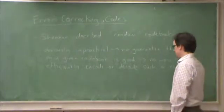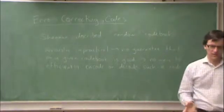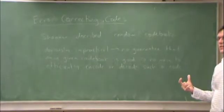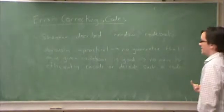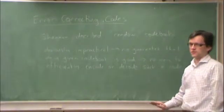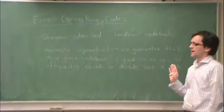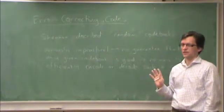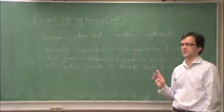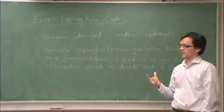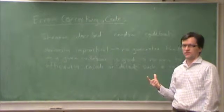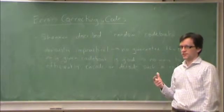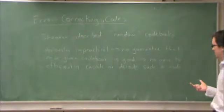There's no way to efficiently encode or decode. How would you encode? You would take your message, numbered one to two to the nr, and find the row of that matrix that corresponded to it and transmit it. The encoding operation already has exponential complexity in n. You have to store all of the two to the nr code words, so as n increases, the complexity of storing the code book increases exponentially.